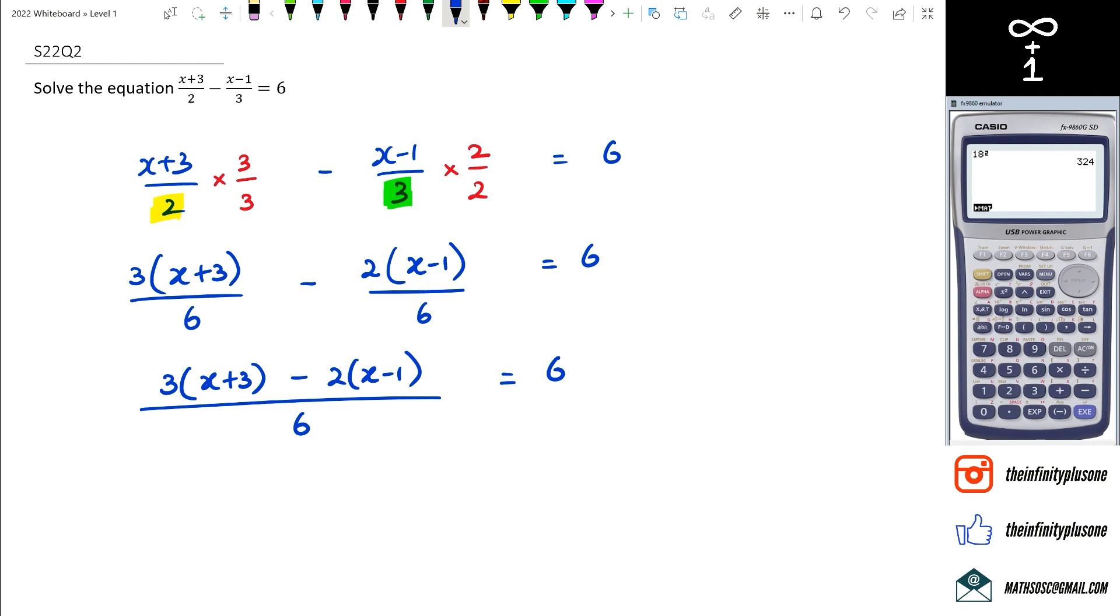So at this point I'm going to get rid of the 6 from the denominator, and I'm going to end up with 3(X+3) minus 2(X-1) equals 6 multiplied by the 6 from the denominator itself.